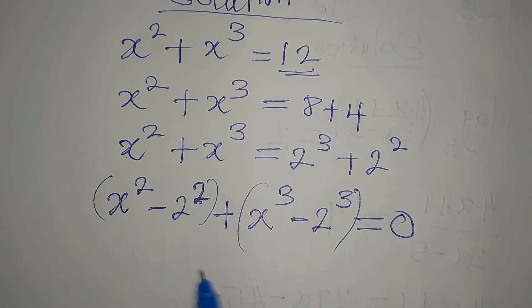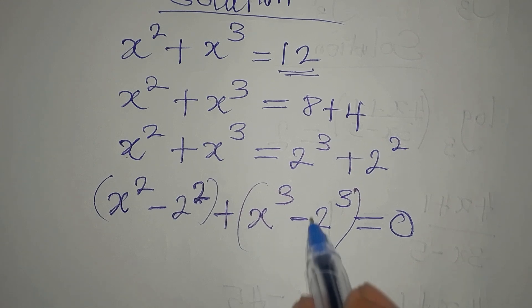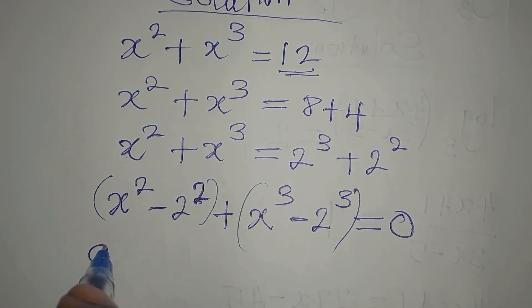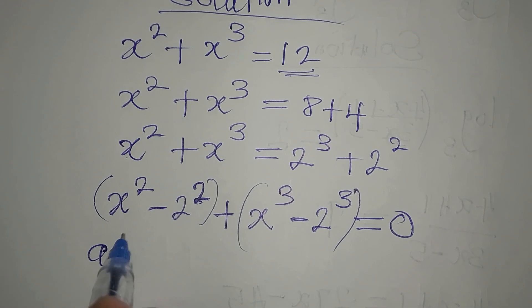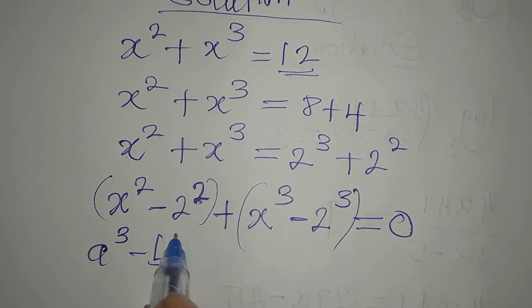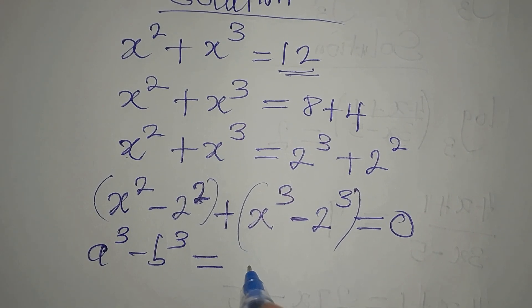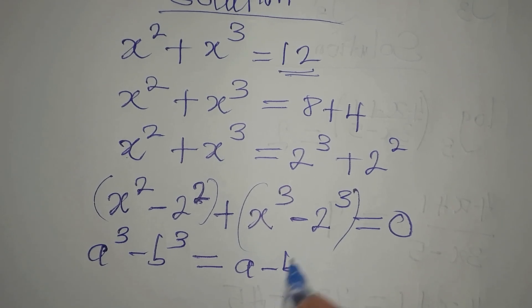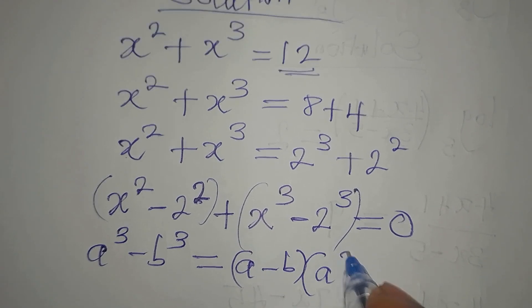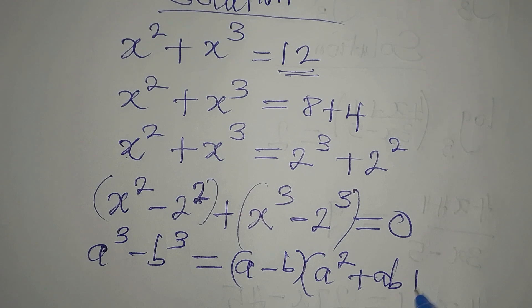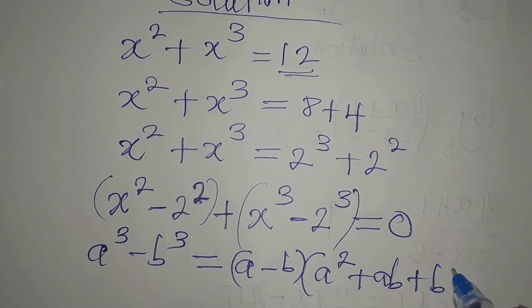This first group we apply the difference of two squares, and this second group we apply the difference of two cubes. Before we go there, let's recall the standard form: a cubed minus b cubed equals a minus b, times a squared plus ab plus b squared.